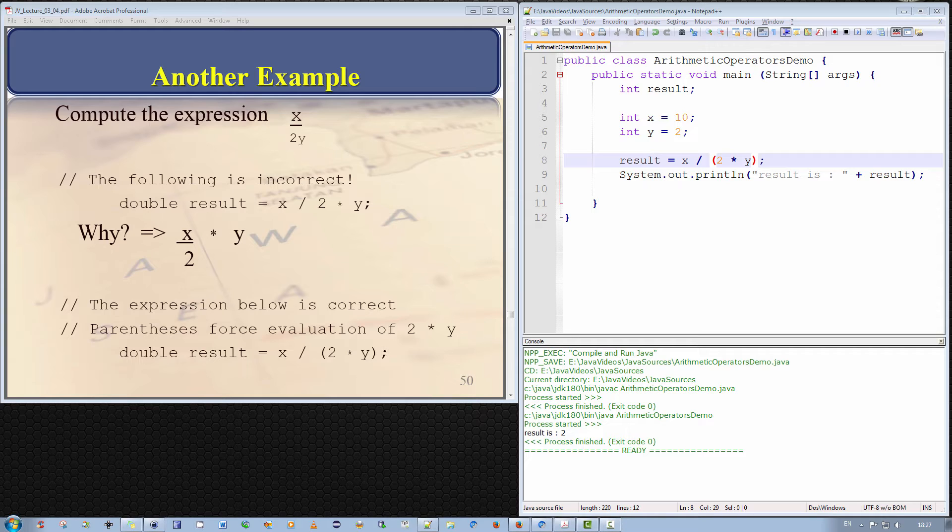In my previous video on arithmetic operators I ended that video with an example of a division operation that resulted in an unexpected answer. I will now begin with that very example and explain exactly what is going on. So let us begin.